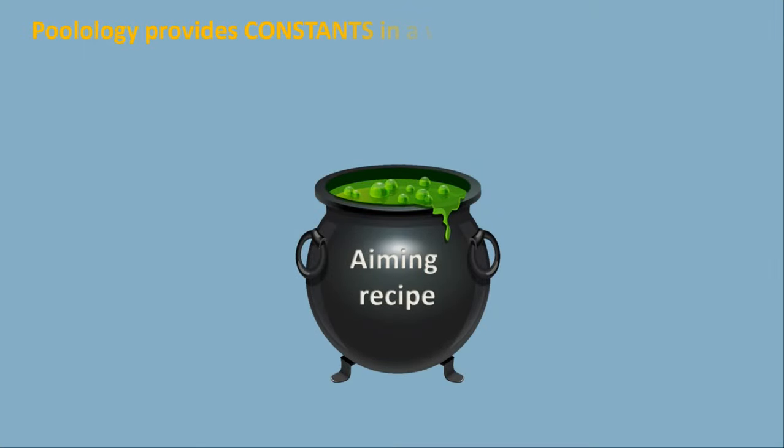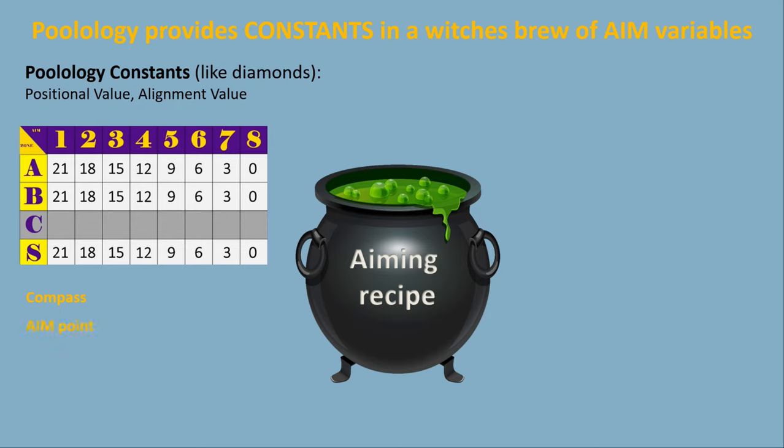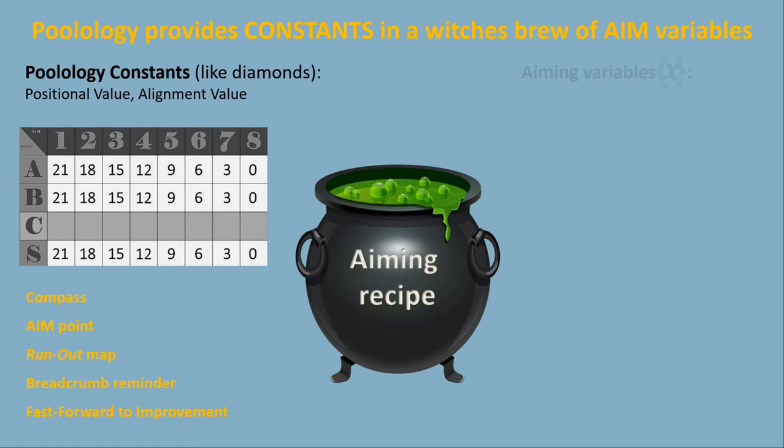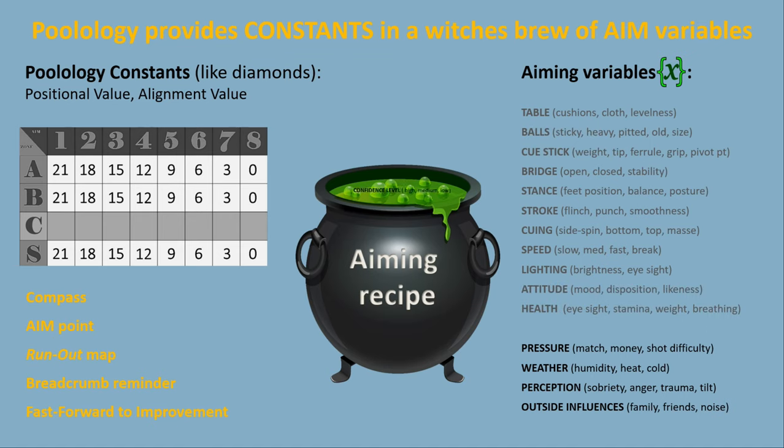In conclusion, aiming pool balls is a witch's brew of variables, at best, and just like meatloaf, everybody seems to have their own recipe. I'm the first to admit poolology is not the holy grail of aiming, but it most certainly gives you constants, which, like diamonds, are the same on every table in the world. If you start thinking about poolology holistically, these constants give you an increased sense of orientation on the table, drastically increase your odds of pocketing balls, help you plan your runouts, and ultimately serve as a breadcrumb you can use to retrace your steps so you can analyze your misses and make adjustments to improve. I don't know any other aiming system that provides that much value. So good luck incorporating poolology in your game. Hopefully it will give you the confidence knowing your game is built on a solid aiming foundation, which is the seed from which all great pool players grow.